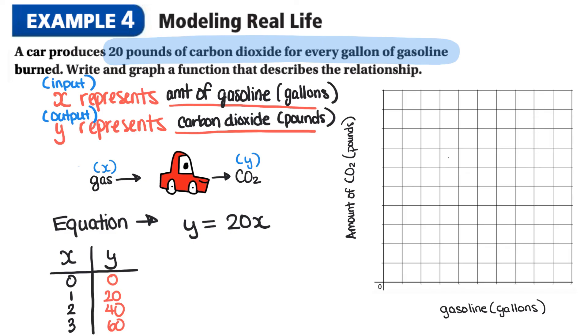So now that we have all of our tables of values in here we now have points that we can use to graph our function. So we can graph the points 0 and 0, then 1 and 20, 2 and 40, and 3 and 60. And we can see that this function is a linear function because it's forming a straight line.